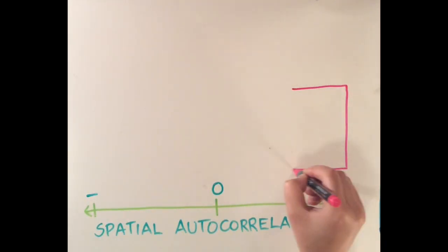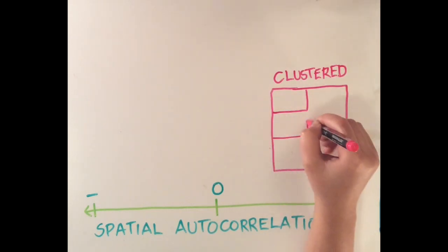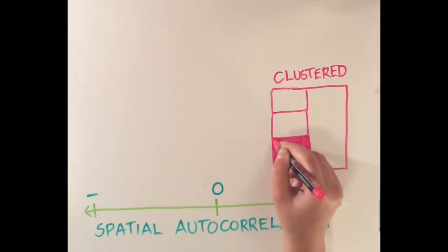Positive autocorrelation leads to the clustering of data points. Perfect clustering would look something like this, with like data sticking closely to like.